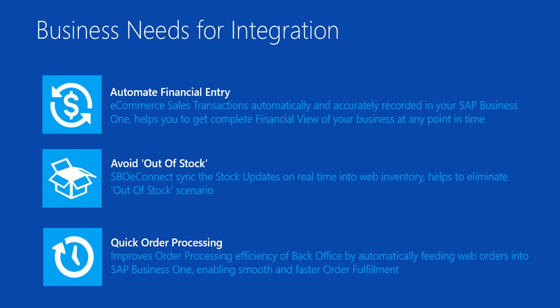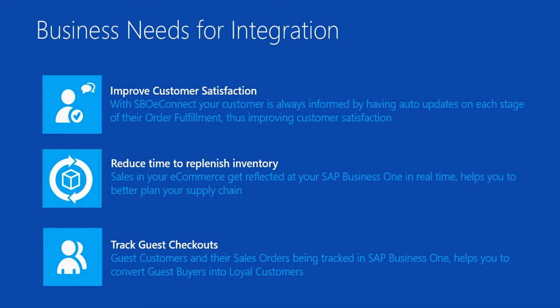Our integration solution provides a fully automated and bi-directional connection between your online and offline operations. Your e-business needs a quick response time — maybe to provide your customers a real-time order status update, or to feed your ERP item stock into your e-commerce website, or to quickly process web orders in the back-office ERP system. And most importantly, which is very vital for your e-business, is to automatically post e-commerce transactions into your ERP's accounting section. These integrations will become automated and will happen in real-time without any hassle through AppSea Connect.